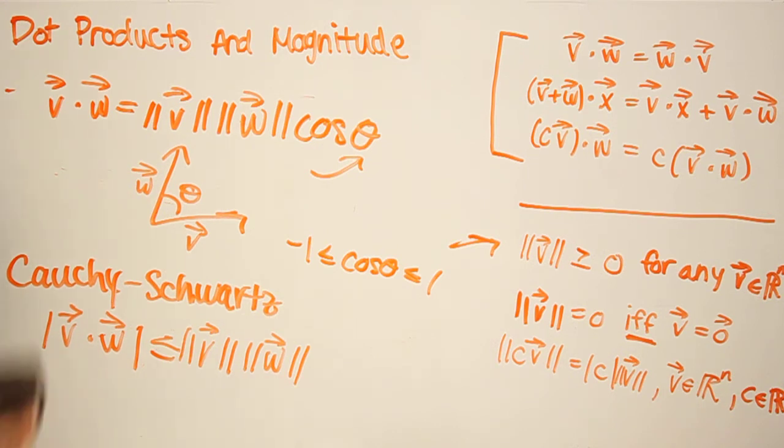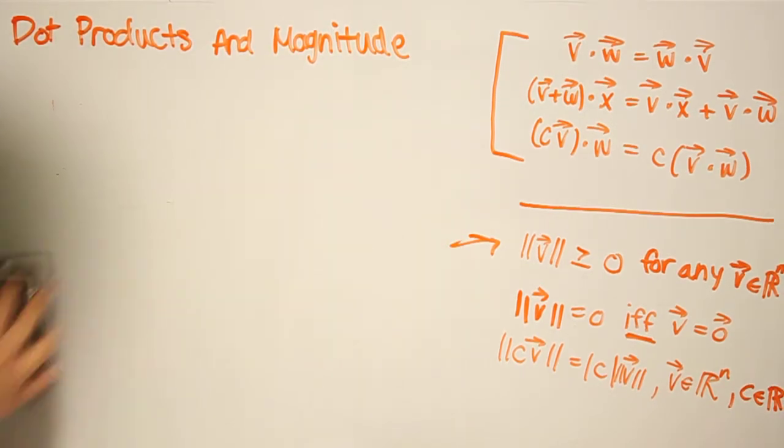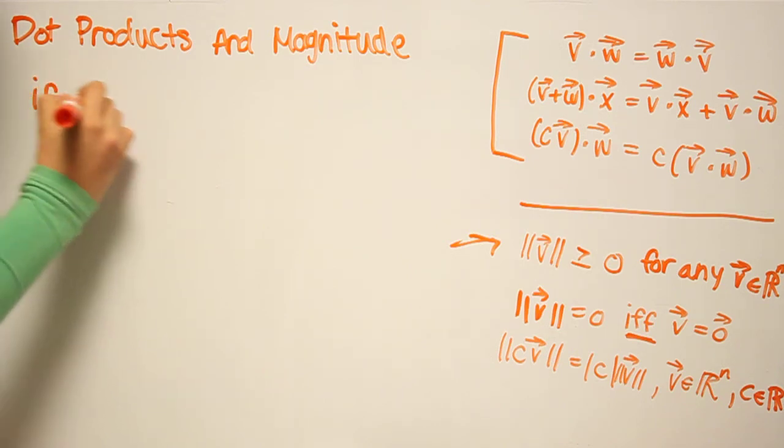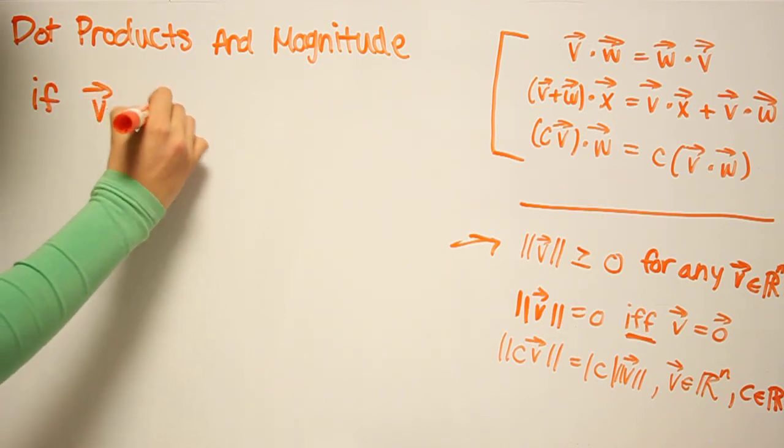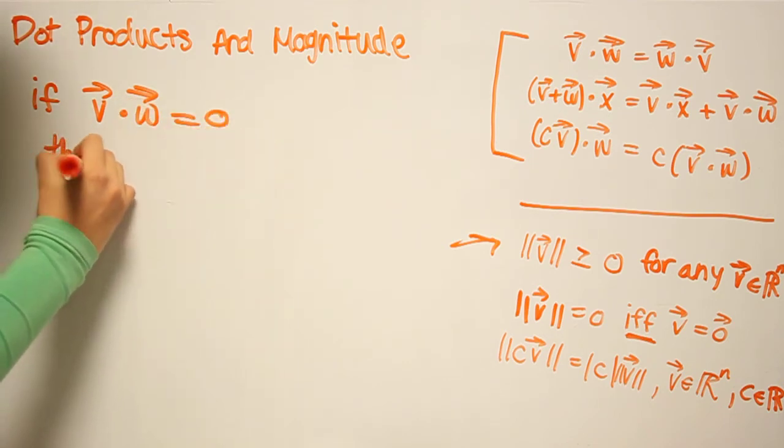Okay. Finally, to wrap things up, we're going to explore some properties of vectors when they are orthogonal. So if a vector V and a vector W have a dot product of 0, then they are orthogonal.